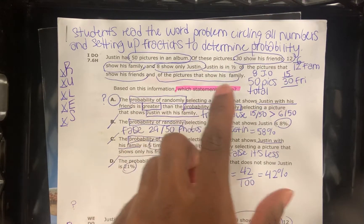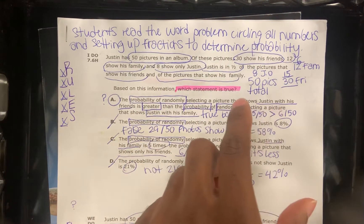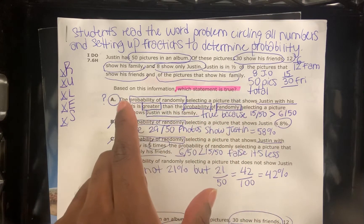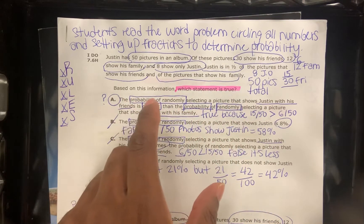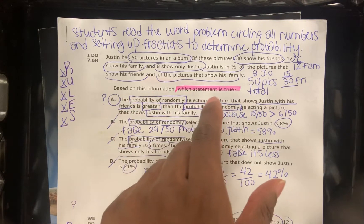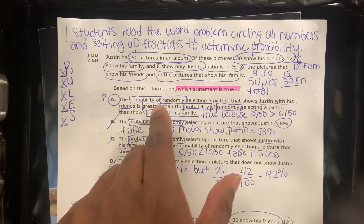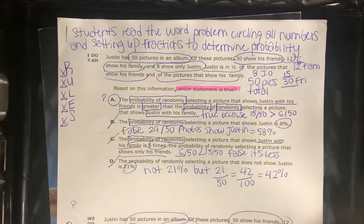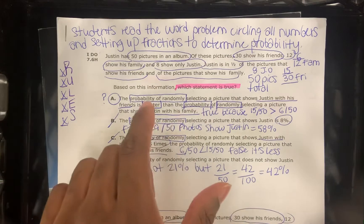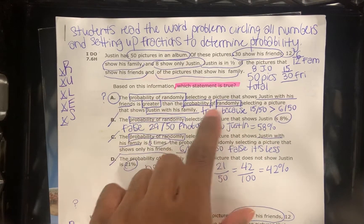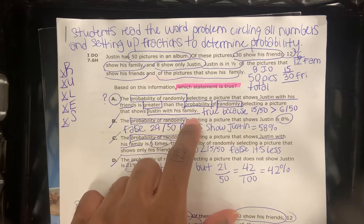Based on this information, which statement is true? Let's look at A: The probability of randomly selecting a picture that shows Justin with his friends is greater than the probability of randomly selecting a picture that shows Justin with his family.